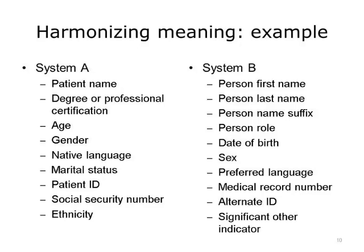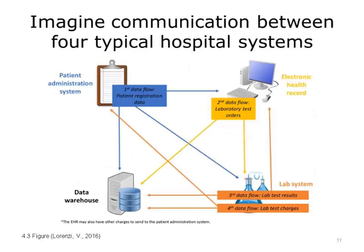Imagine how semantic harmonization and interoperability would work with more systems and data types. Consider the work required to communicate between only four typical hospital systems: a patient administration system, an EHR, a laboratory information system, and a clinical data warehouse. The patient administration system would send patient data to the EHR, the lab, and the clinical data warehouse. Then laboratory orders would go from the EHR to both the clinical data warehouse and the laboratory system. The laboratory system would send its results to the clinical data warehouse as well as the EHR, and the patient administration system would receive charges from the laboratory information system.